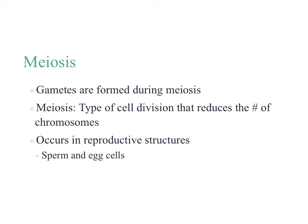Meiosis is the process where gametes are formed. In this process, the number of chromosomes are reduced — we typically have 46, and they get reduced in half to 23. Meiosis happens in the reproductive structures of our bodies. In males, this happens in the sperm; in females, it happens in our eggs.